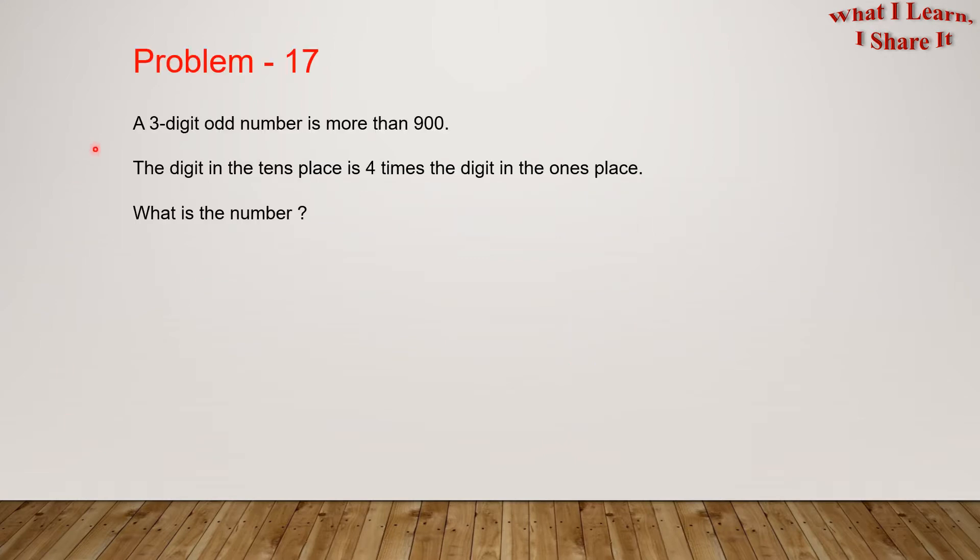A three-digit odd number is more than 900. The digit in the tens place is four times the digit in the ones place. What is the number?